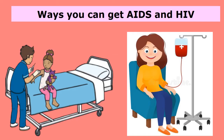Let's look at some ways we can get HIV and AIDS. First, the picture on the left shows needles. If a needle is contaminated, or was used by a person who had HIV, and you use that needle, you may be able to get HIV. Second, if you use blood that is not properly treated by the health authorities, you can get HIV. So make sure you get blood from the proper health authority.